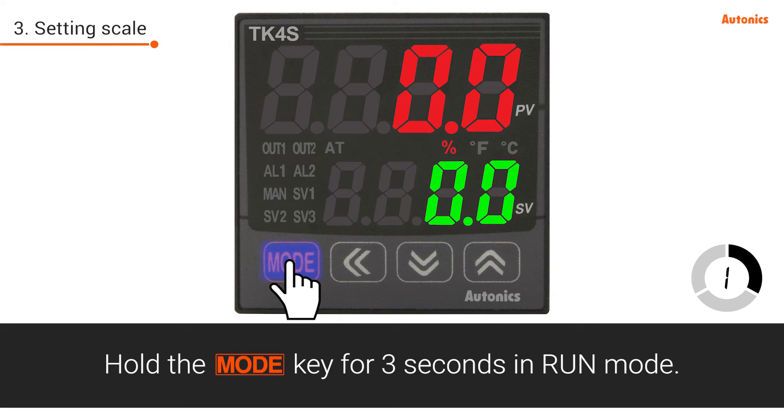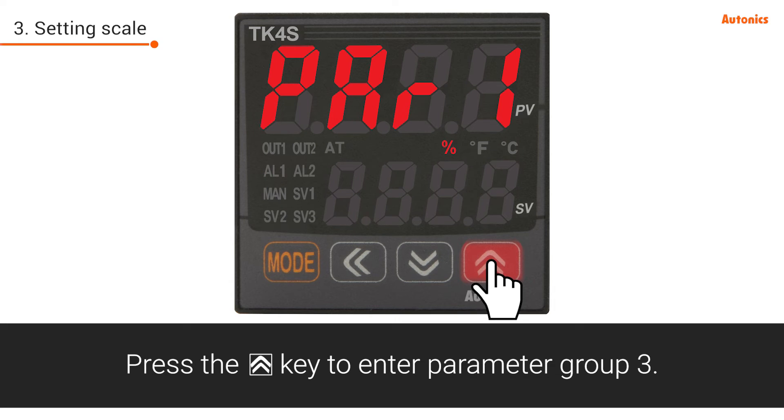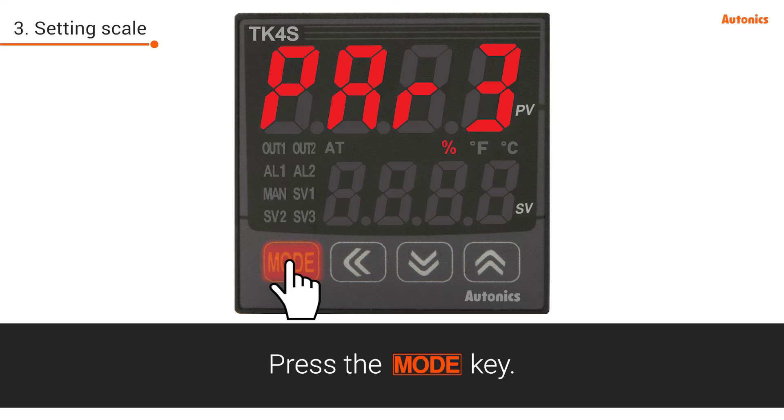Hold the mode key for 3 seconds in run mode. Press the up key to enter parameter group 3. Press the mode key.